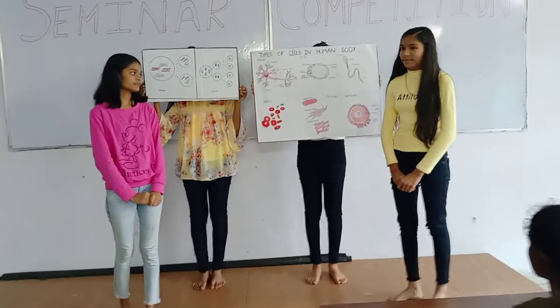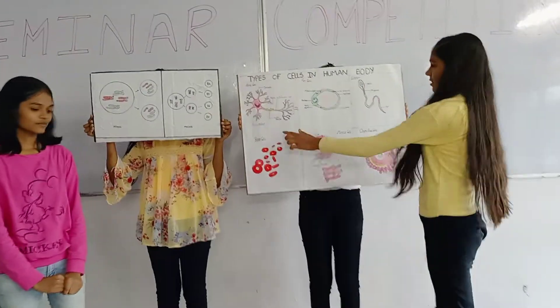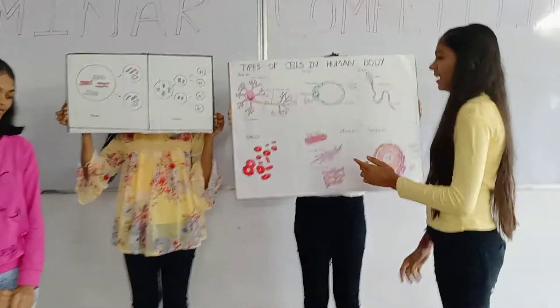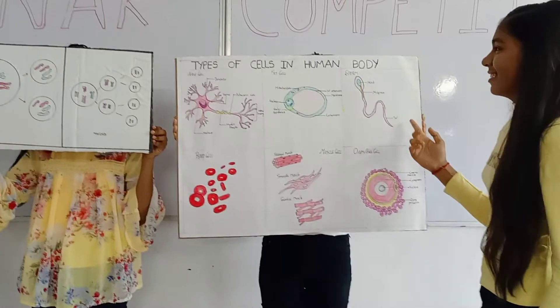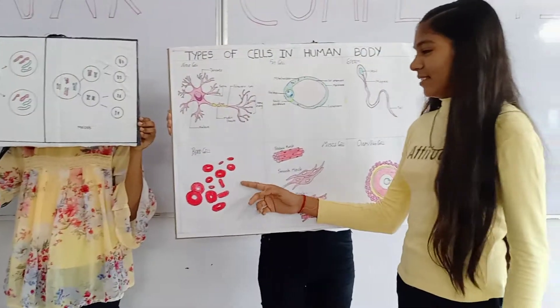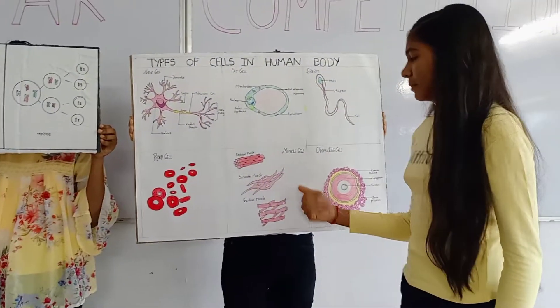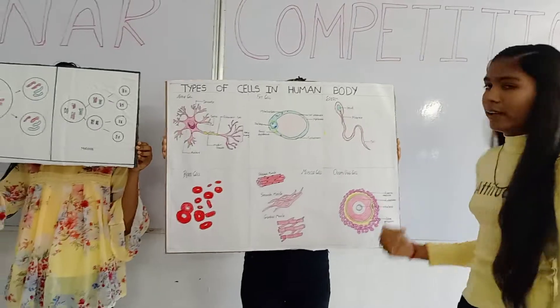Can you name them? Yes. First, nerve cell. Second, fat cell. Third, sperm. Fourth, blood cell. Fifth, muscle cell. And sixth, ovum or egg cell.